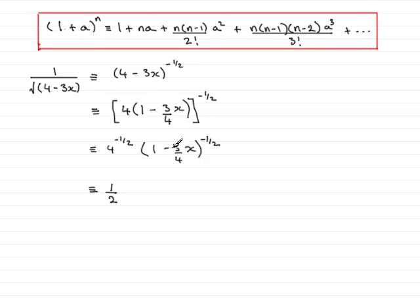The a is really minus 3 quarters x, and the power n is minus a half. So just put a square bracket up here, and according to the formula above here, it's going to be 1 plus the power n, which is now minus a half, times a, and a is minus 3 quarters x. So that's the x term done.